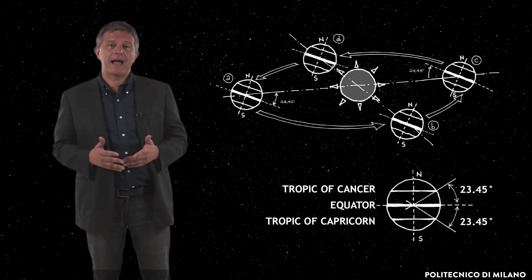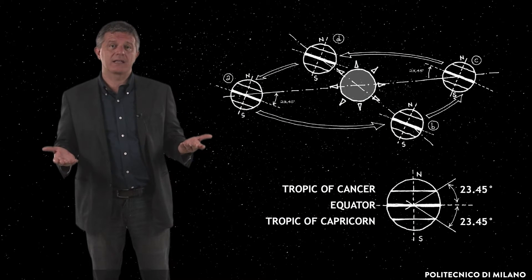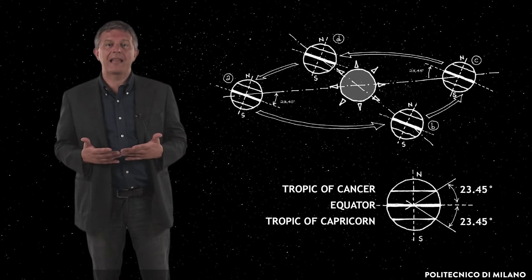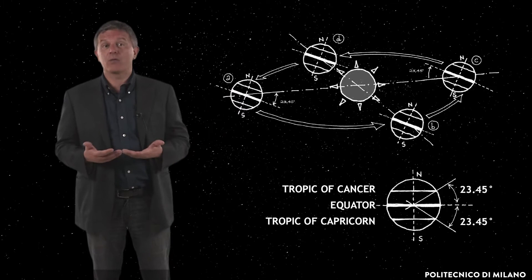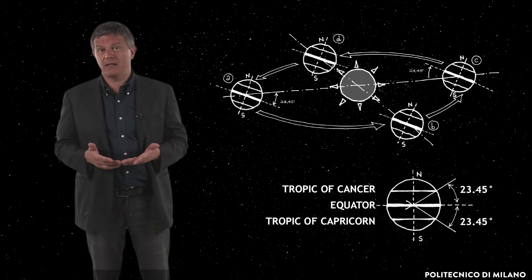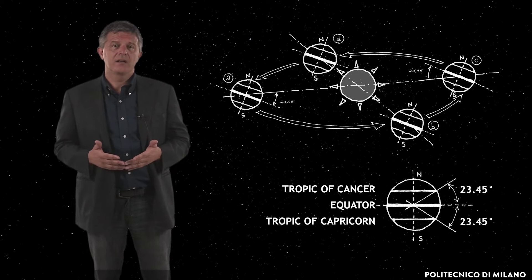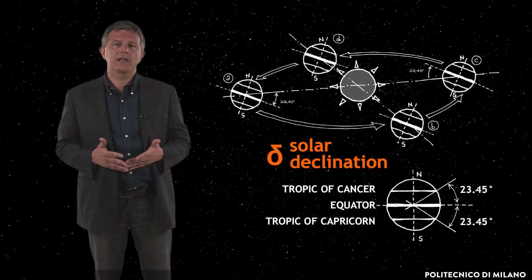The tilt of Earth's axis with respect to the plane of the orbit is constant, but the angle formed between the line joining the center of the Earth with the center of the Sun and the equatorial plane changes day by day, or better, instant by instant. This angle is called the solar declination delta.